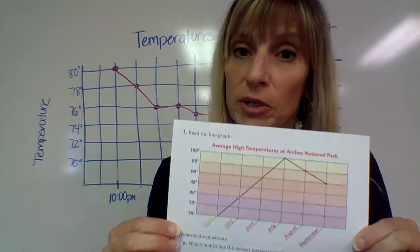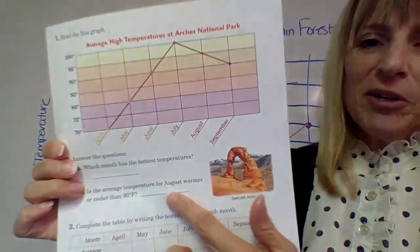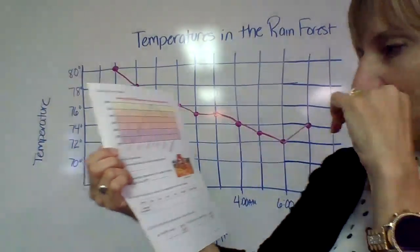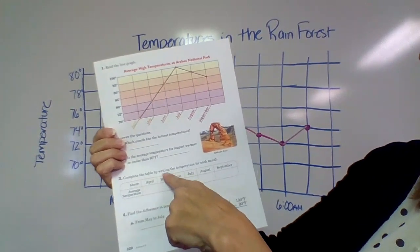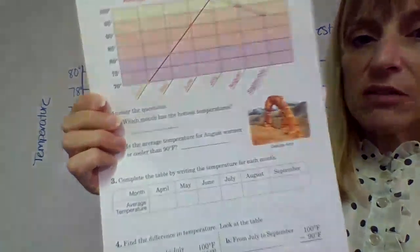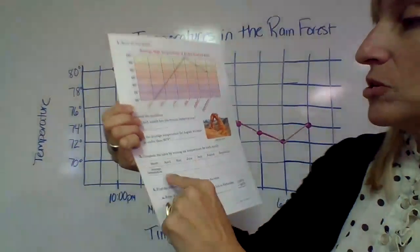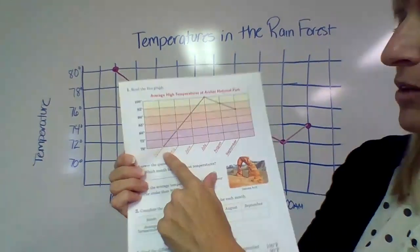Hopefully you would say warmer because it is, so you put warmer right there. All right, number three, I want you guys to try to do this by yourself. Complete the table by writing the temperatures for each month. We'll do the first one together.